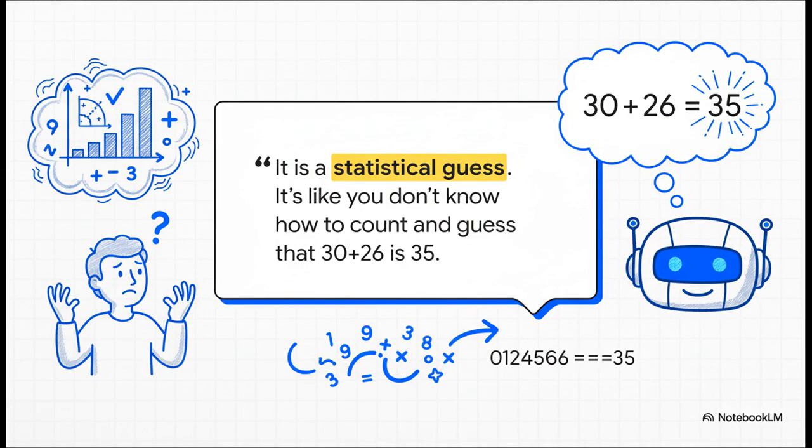You know, this analogy just nails it. Imagine you have zero concept of math, but you know that when someone asks a question with numbers, they expect a number back. 35 sounds like a totally reasonable number, so you just say it. That is exactly what the AI is doing. It's making a really, really sophisticated statistical guess to continue a pattern, not to state a proven fact.